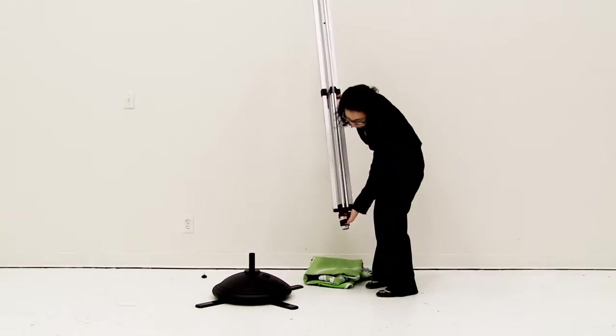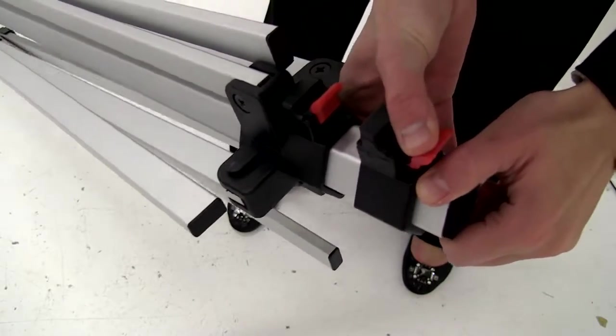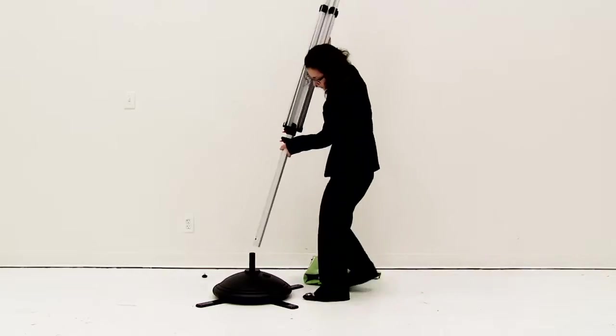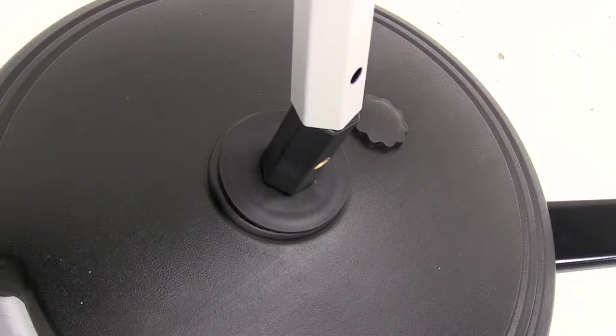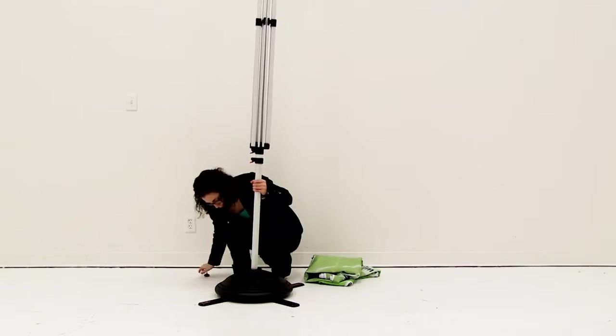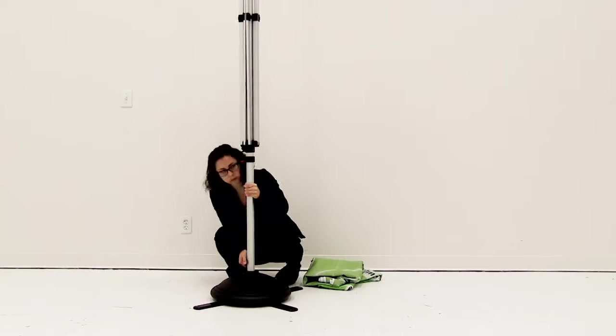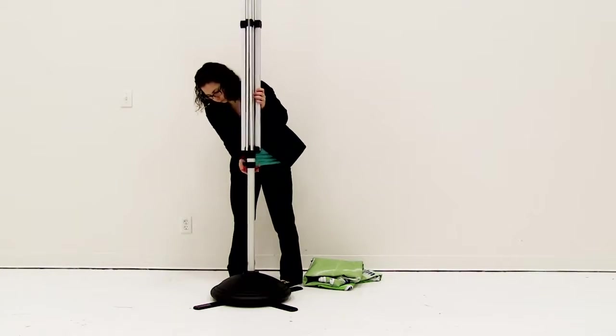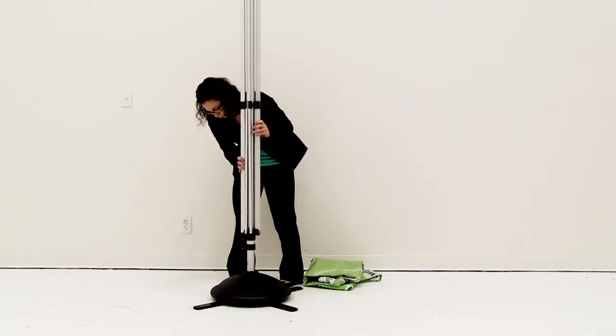On the umbrella, completely extend the bottom pole. Insert the pole onto the base making sure to align the holes. Screw the black knob screw into the hole. Press the red lever and allow the umbrella pole to go down.